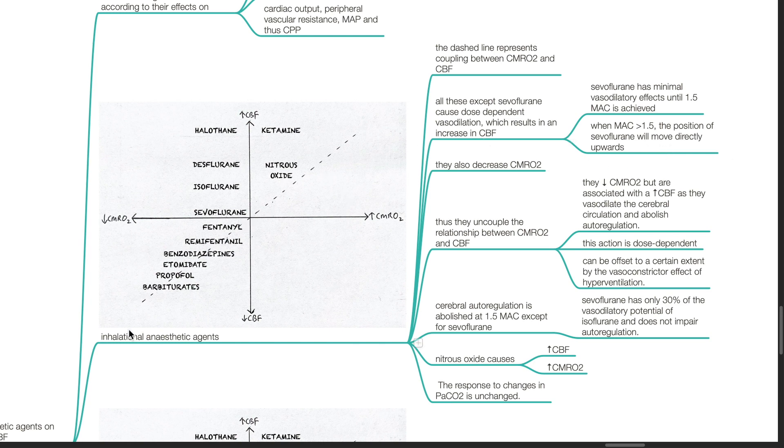Inhalational anesthetic agents also decrease CMRO2, thus they uncouple the relationship between CMRO2 and CBF. They decrease CMRO2 but are associated with an increase in CBF as they vasodilate the cerebral circulation and abolish autoregulation. This action is dose-dependent and can be offset to a certain extent by the vasoconstrictor effect of hyperventilation. Cerebral autoregulation is abolished at 1.5 MAC except for sevoflurane.